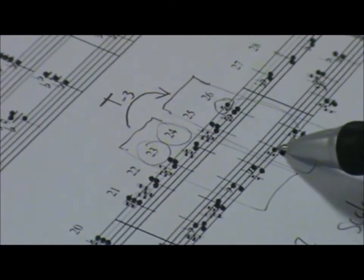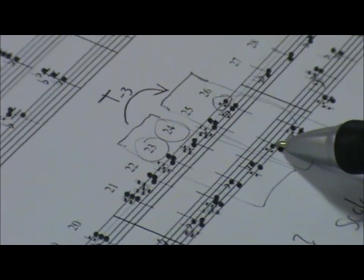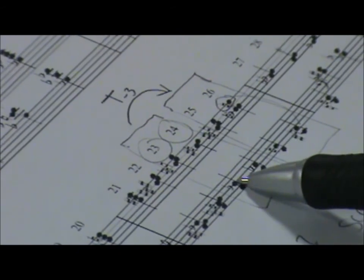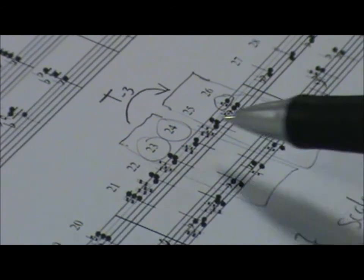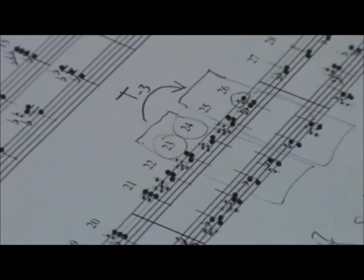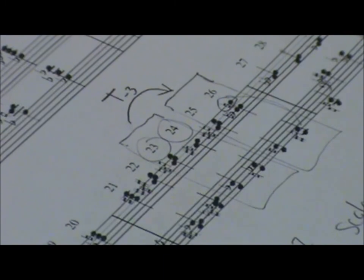Does B flat end up a third lower? Three semitones? Yeah. B flat becomes G. F, the lowest note, becomes D. And so on. Everything moves down three semitones.